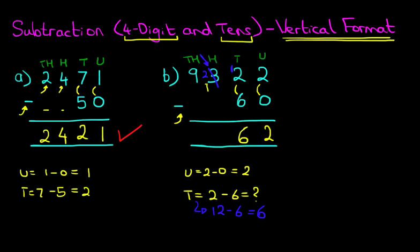Next, we've got the hundreds column. We've got 2 minus 0 — 2 minus 0 is 2. Lastly, we have the thousands column. We've got 9 minus 0 — 9 minus 0 is 9. Therefore, the answer to the question is 9,262. Again, it was nice and simple.